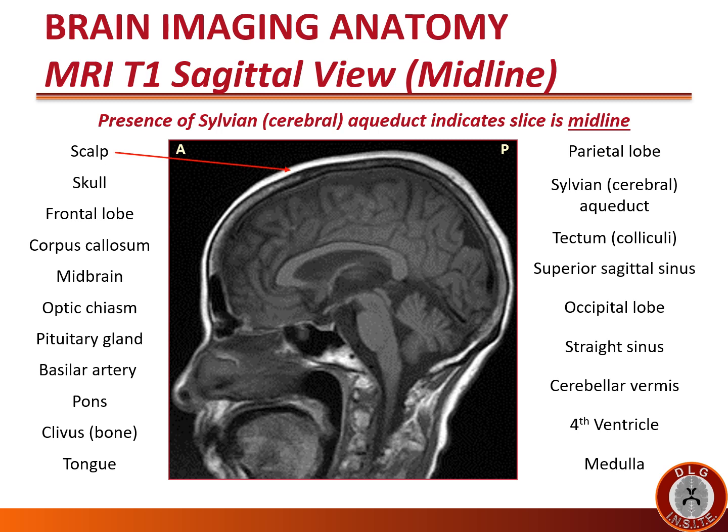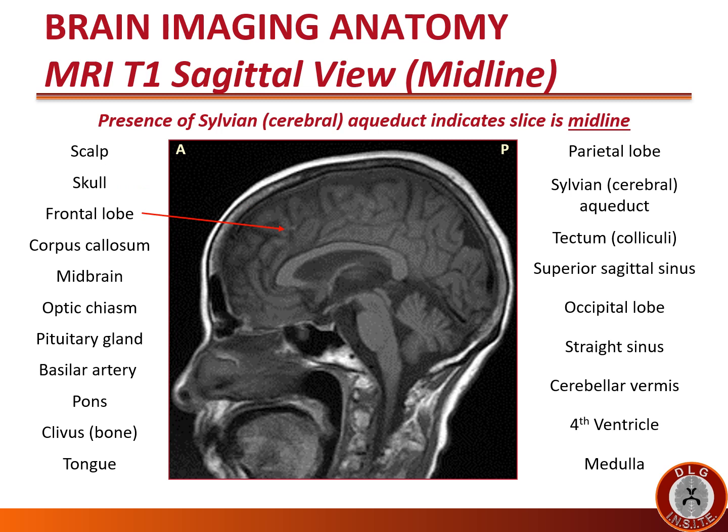Fat is hyperintense or white on a T1 image, so the outermost white band in this image is the scalp. The next layer is the skull, which has three distinct layers: the outer layer is black or hypointense, composed of calcified compact bone; the middle white layer is composed of fatty marrow in spongy bone; and the innermost layer is also black, again composed of calcified compact bone. The front part of the brain is the frontal lobe.